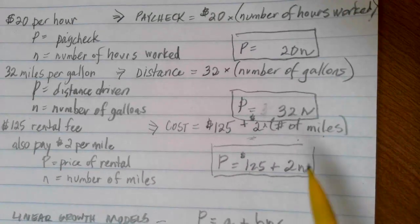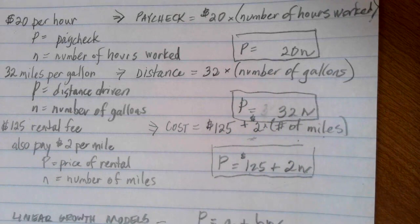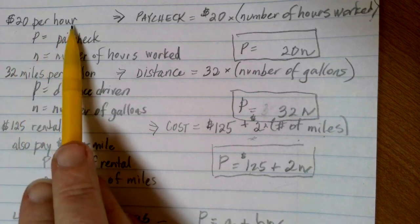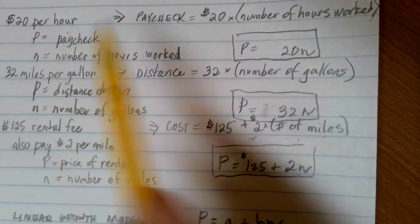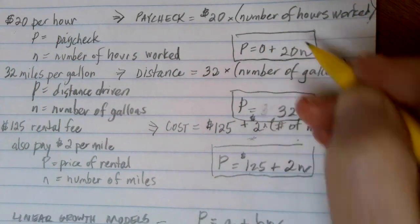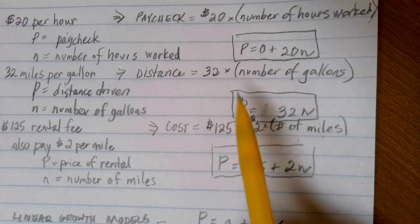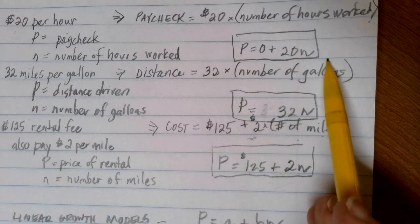Now, if we go back and look at our first couple of examples, notice that we didn't have any number that was being added. So are these still linear equations? And the answer is absolutely. If we're looking at $20 per hour, if we don't work any hours, we don't get any money. So in this case, our fixed value would be zero. And we know that zero doesn't change the value of my results. So writing this as P equals 20N is perfectly fine, and it does meet the criteria for being a linear equation.